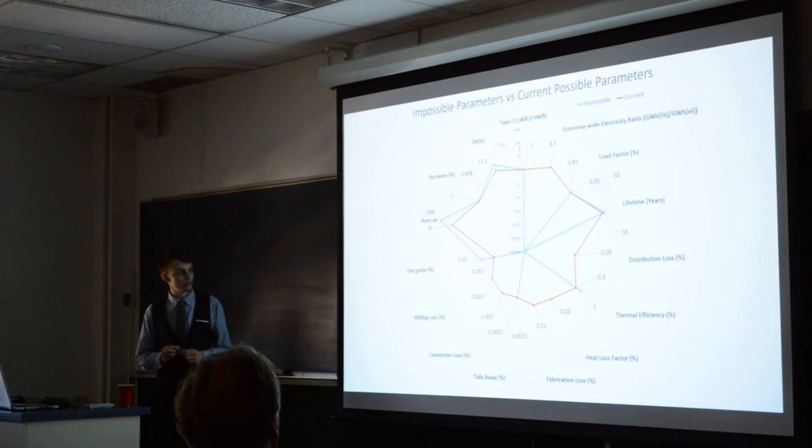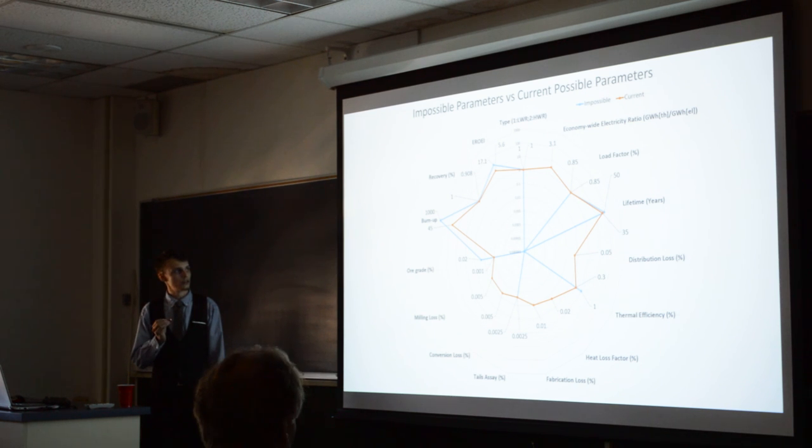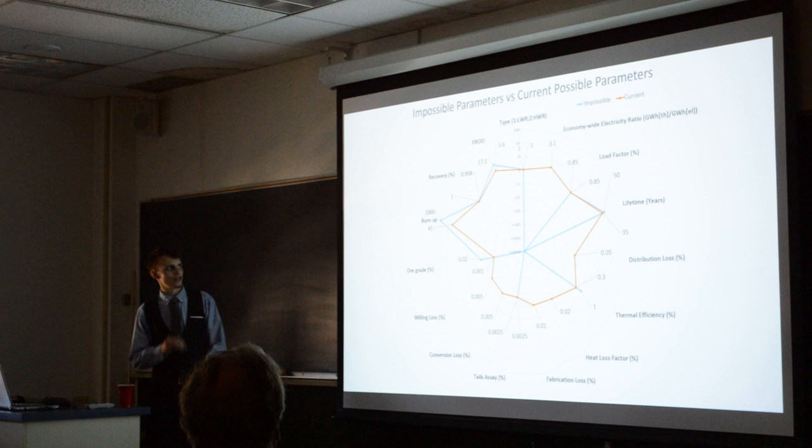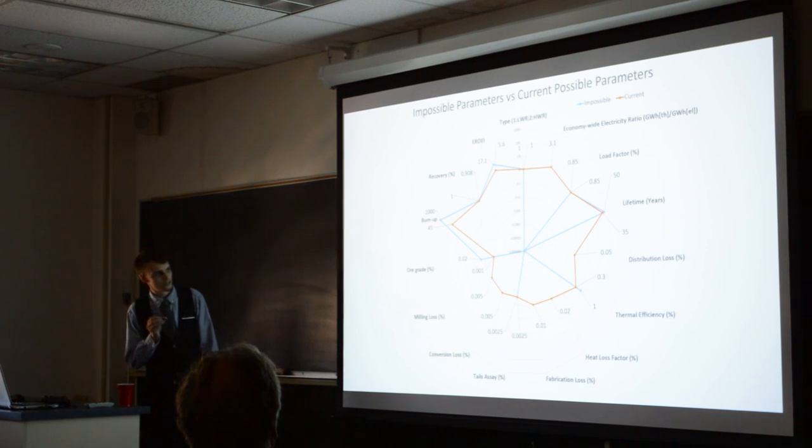This here is a logarithmic radar chart that illustrates the differences between where we are, at the end of the orange, and where we're going to have to get to. And the difference between a burn up of 45 and 1,000 gigawatt days of thermal energy per ton of uranium is insane. Not to mention the thermal efficiency differences.